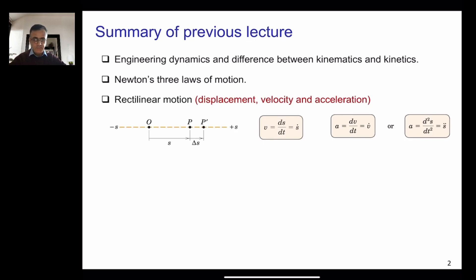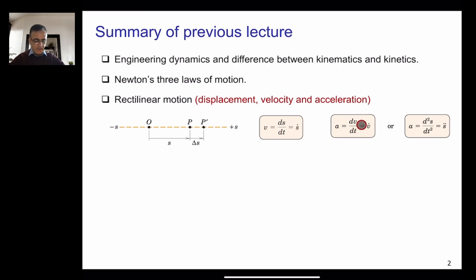We discussed rectilinear motion, in which we only concentrate on the kinematics part. We discussed displacement, velocity, and acceleration. If you consider a point at location P, and it moved to P dash, the displacement is delta S. The velocity can be written as dS/dt, which is S dot, and acceleration is dV/dt, which is V dot. A is also d²S/dt², which is S double dot.